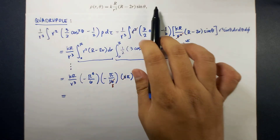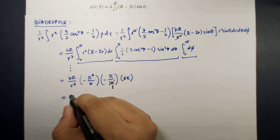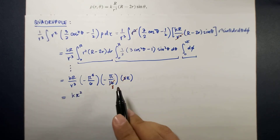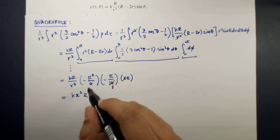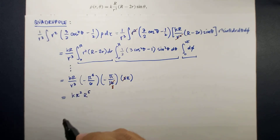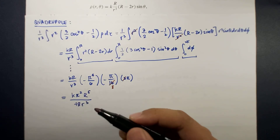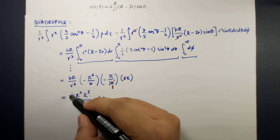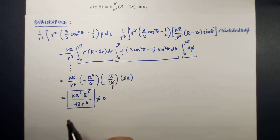Therefore the quadrupole contribution for this configuration equals k times pi-squared times R-to-the-fifth divided by 48 times r-cubed. This is not equal to zero, so this term survives.